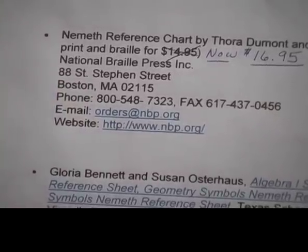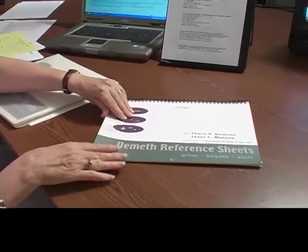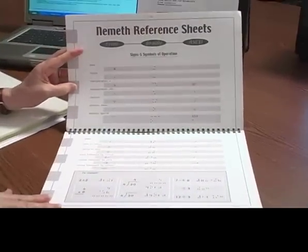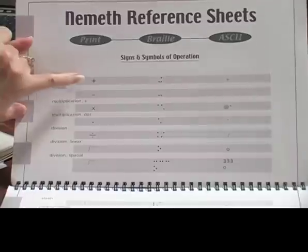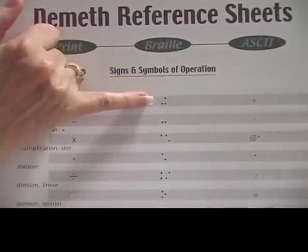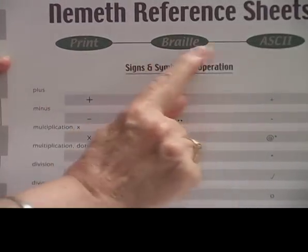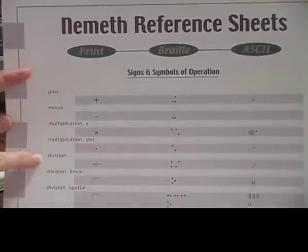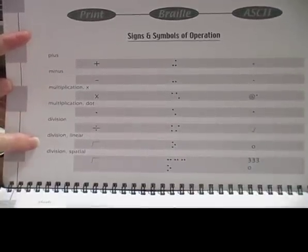The first thing I'll show you is the print version. It's basically a lot like a calendar — it opens up very much like a calendar would. You've got your symbol in print, then you have it in braille, braille again, and then what it would look like in ASCII. So you have it in print, braille, and ASCII, along with a little description of what's going on — for example, multiplication times or multiplication dot, division linear.